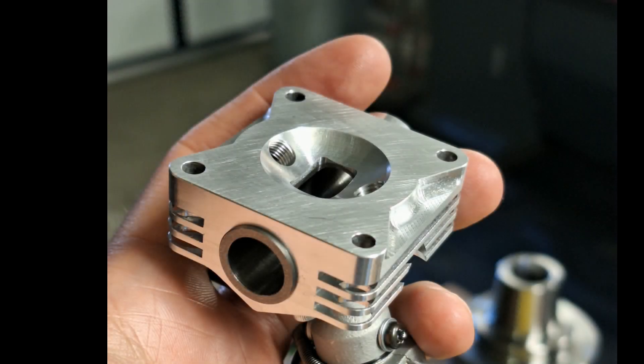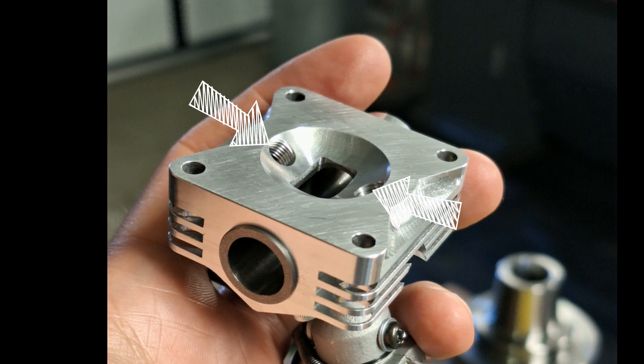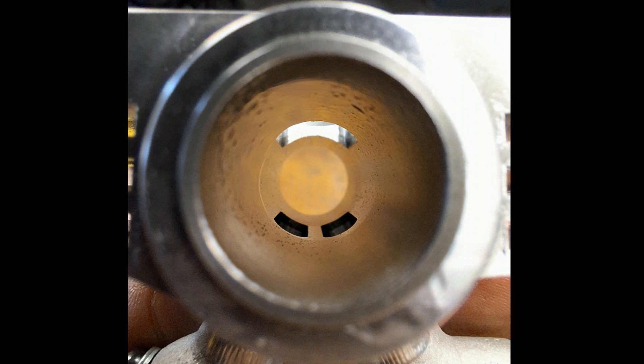Here you can see the hemispherical combustion chamber with the valve opening in the center and the two threads for the glow plugs. Here we are looking into the cast iron sleeve for the rotary valve.